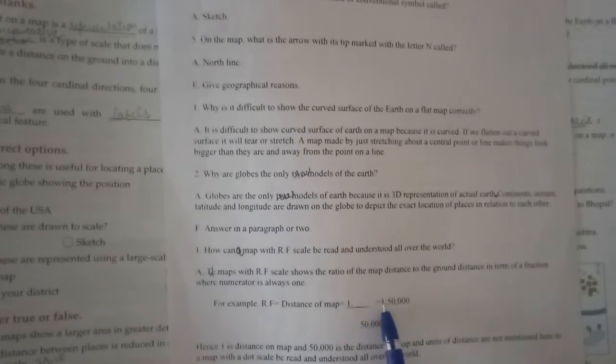When we cover 50,000 meters on the ground, how much we can show it on the map? 1 centimeter. Hence 1 is the distance on the map and on the ground the distance is 50,000. So it means if we keep one point on the map, it travels 50,000 meters on the ground.